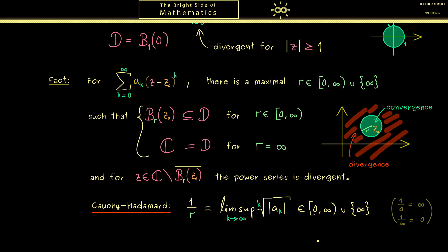Okay, the last important thing I should tell you is that this maximal r is often called the radius of convergence for the power series. And I would say it's a good exercise for you to calculate the radius of convergence for the exponential function from above.